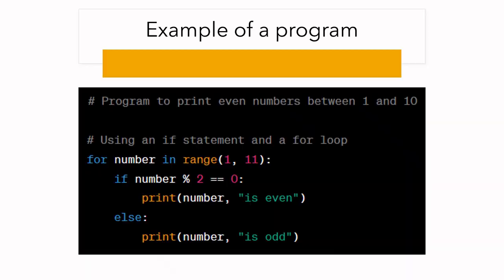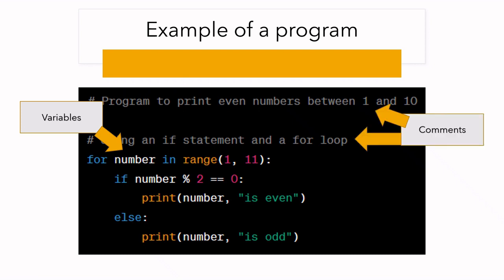All of these languages have different features, and basically they are providing you with different environments in order to create your program. So let's have a look at a program itself. In front of you, you just have a Python program that is going to take the numbers from 1 to 10, check whether the numbers are odd or even, and print that. For that, it's going to use a variable called 'number', and you are going to have a loop.